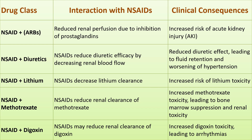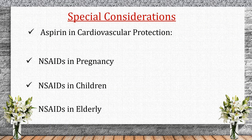Lithium, used for bipolar disorder, has levels controlled by kidney function. NSAIDs reduce lithium clearance, leading to increased lithium toxicity, which can cause tremors, confusion, and kidney damage. Close monitoring of lithium levels is essential when NSAIDs are prescribed. Methotrexate, used for autoimmune diseases and cancer, has reduced clearance with NSAIDs, leading to increased toxicity causing bone marrow suppression and kidney failure. Digoxin, used for heart failure and arrhythmias, may have reduced renal clearance with NSAIDs, leading to toxic levels that can cause arrhythmias and heart complications.